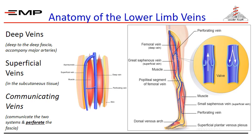Blood is drained from the lower limbs via two separate systems: a superficial system and a deep system. Both systems are communicated by perforator veins. You can pause the video to study the figures.